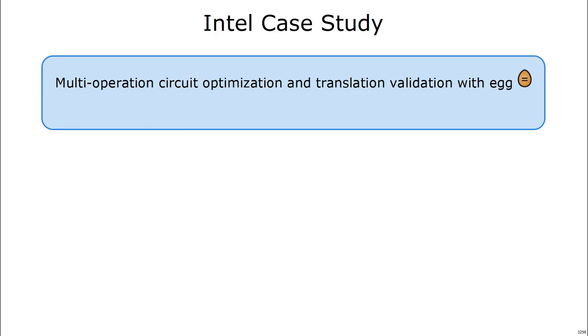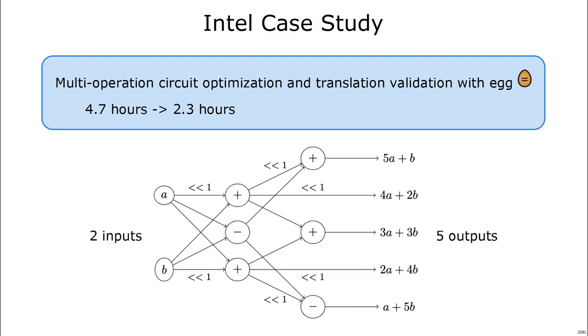We also did a case study with Intel, who is using Egg to perform multi-operation circuit optimization and translation validation. So these are circuits which perform multiple operations and give multiple results for a fixed number of inputs. At Intel, it's very important that the resulting circuits are correct, so they have a very intense verification process on these resulting proofs from Egg. Using Egg's greedy proof reduction algorithm, we were able to reduce this verification time from 4.7 hours to 2.3 hours.